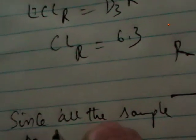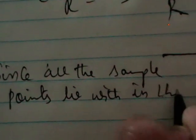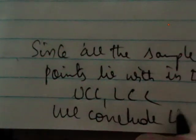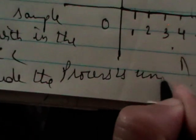After plotting the point, if all the points lie between UCL and LCL, we conclude that the process is under statistical control. Since all the sample points lie within the control limits, within UCL and LCL, we conclude the process is under statistical control. Thank you.